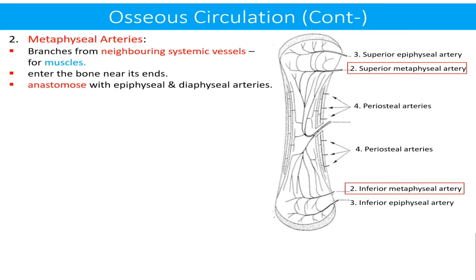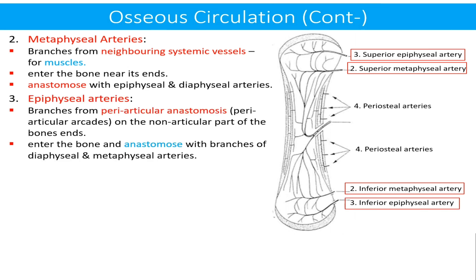The second set is the metaphyseal arteries. These are branches from the neighboring systemic vessels which supply the muscles. These arteries enter the bone near its ends and anastomose with the epiphyseal and diaphyseal arteries. The third set comprises epiphyseal arteries, which are branches from the periarticular anastomosis present on the non-articular part of the bone ends. They enter the bone and anastomose with branches of the metaphyseal and diaphyseal arteries.